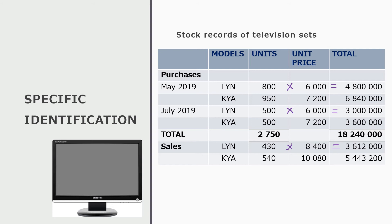For the Kia model: in May we bought 950 units at R7,200 each, giving a total purchase value of R6.84 million. In July, we purchased another 500 units at R7,200 each, totalling R3.6 million. During the year, 540 Kia models were sold at a selling price of R10,080 each, so the total value of Kia sales was R5.4432 million.